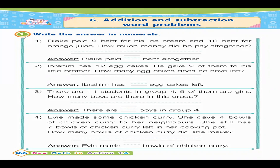So we have number one: write the answers in numeral. In number one, the answer is 9 plus 10 equals 19. Blake paid 9 baht for his ice cream and 10 baht for orange juice. How much money did he pay altogether? So Blake paid 19 baht altogether.